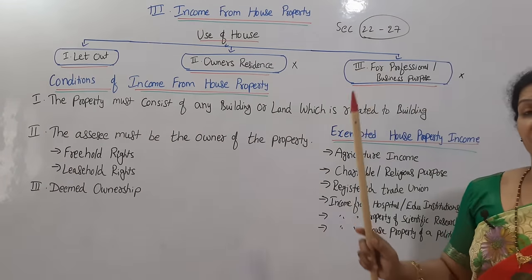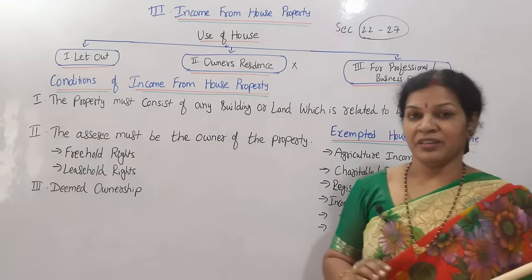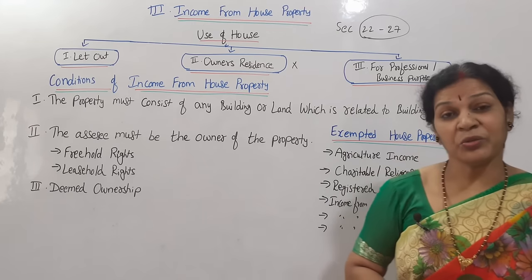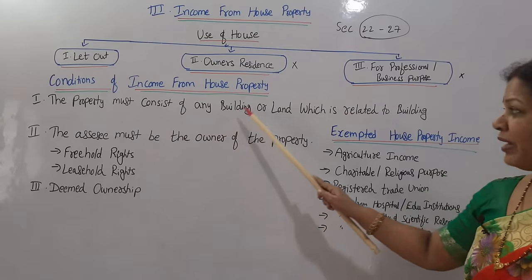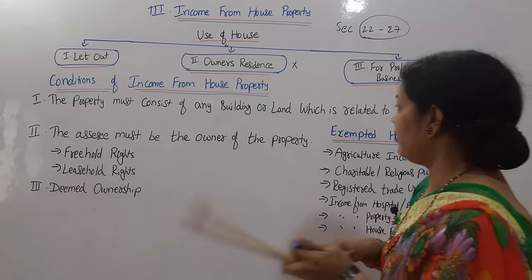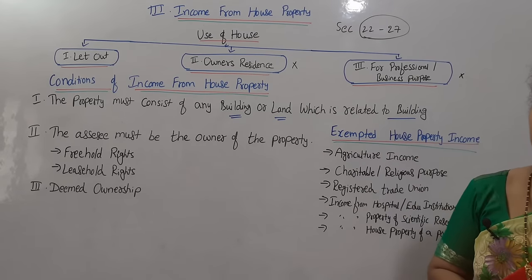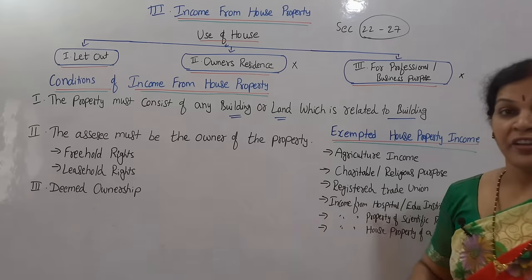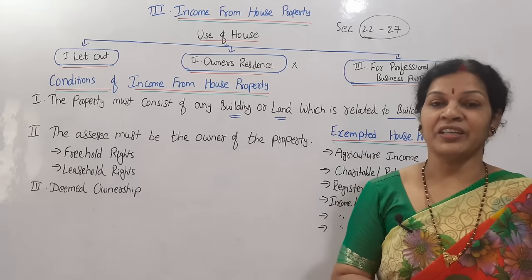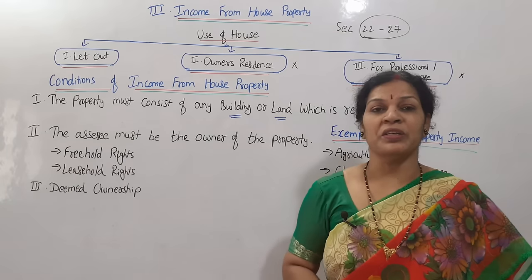Now, you must remember the conditions of income from house property — how we treat something as income from house property. There are three conditions. The first condition is that the property must consist of any building or land which is related to a building. So physically, something must be available on the land — a building.